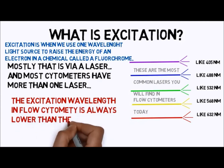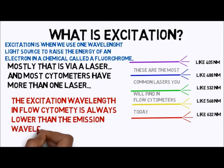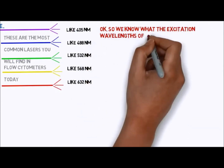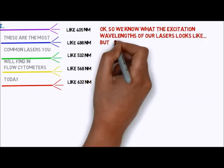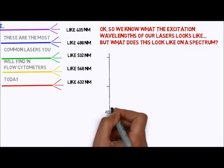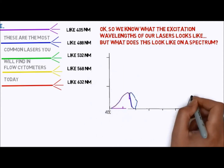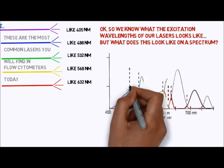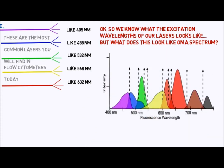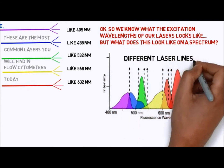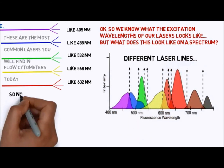Remember that the excitation wavelength in flow cytometry is always lower than the emission wavelength, since non-linear systems are not common in this field. Excitation is when we use one wavelength of light to raise the energy of an electron to an excited state in a fluorochrome. While we always know the excitation wavelength of our laser, we have to look carefully at where these wavelengths fit on the visible spectrum. When we place known lasers, we get something like this chart. Note that when we combine lots of fluorescent dyes, we cover the entirety of the visible spectrum.